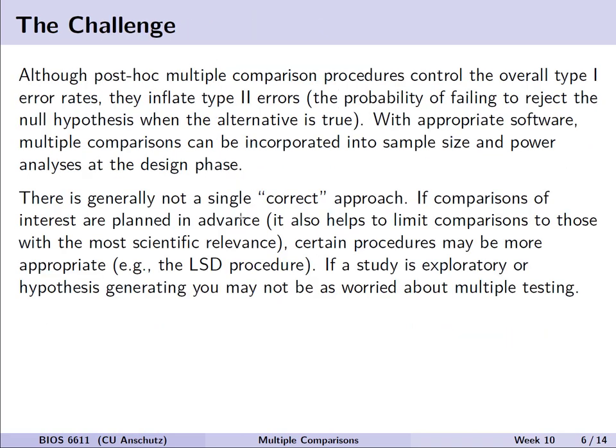This leads us to the practical challenge of how we address this. Although post-hoc multiple comparison procedures to control the overall type 1 error rates exist, the trade-off is that they inflate the type 2 error rate — the probability of failing to reject the null hypothesis when the alternative is true. With appropriate software, we can incorporate multiple comparisons into our sample size and power calculations at the design phase, but that trade-off will generally be an increase in the sample size we need. So there is no free lunch.